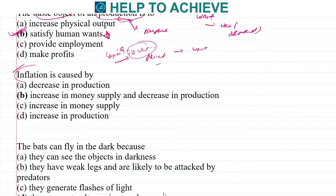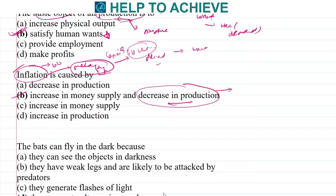Next: inflation — in Hindi called mehengai. Inflation happens whenever there is an increase in money supply and a decrease in production. Decrease in production means products are very scarce in the market. When demand is very high and products are very few, people are ready to spend more money, so the cost of the product increases. This is the correct answer: increase in money supply and decrease in production.